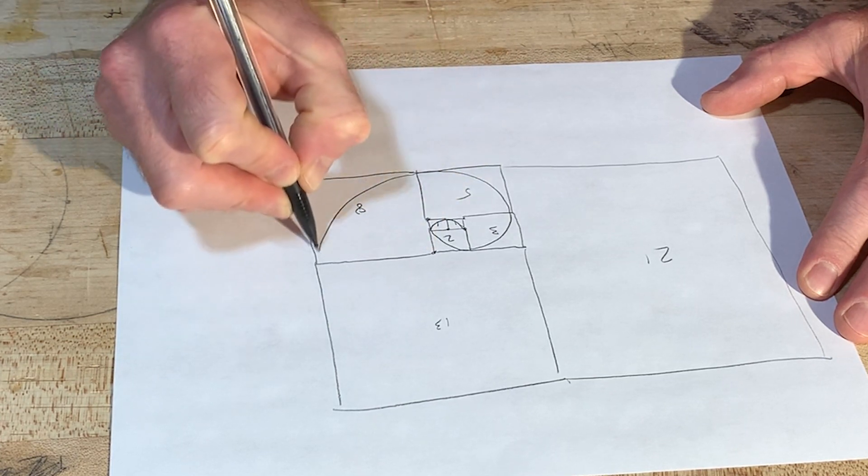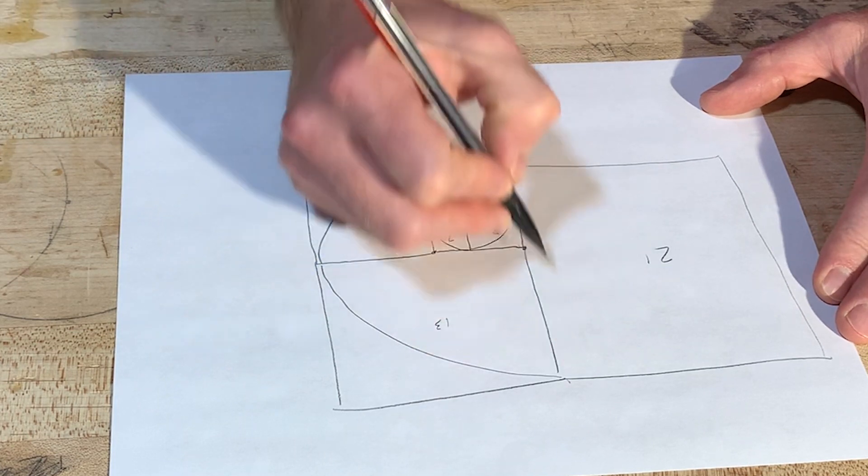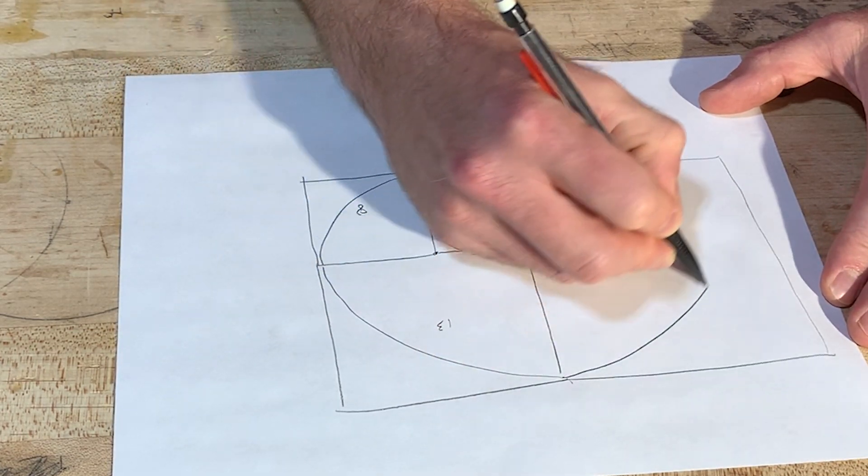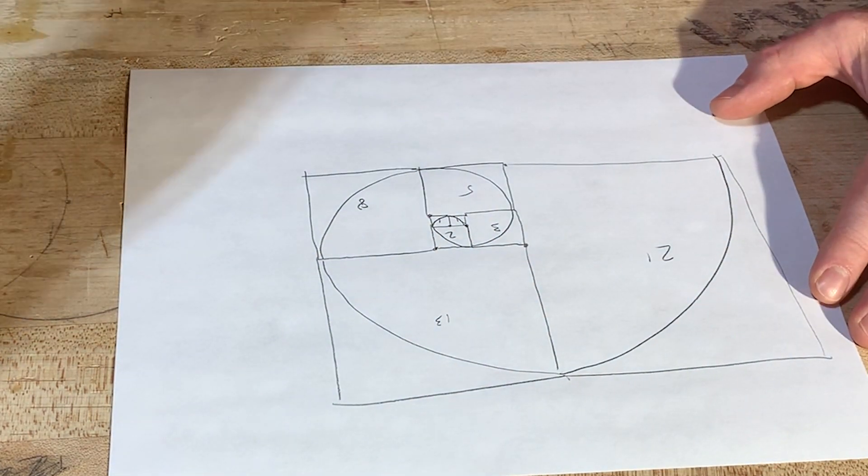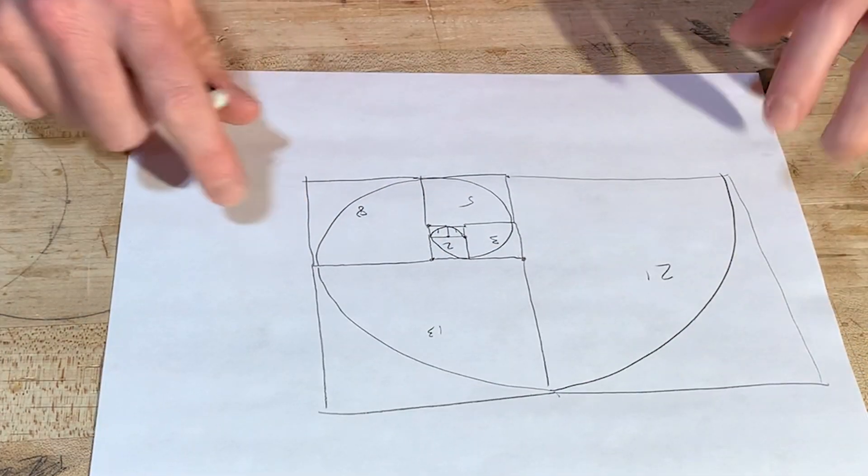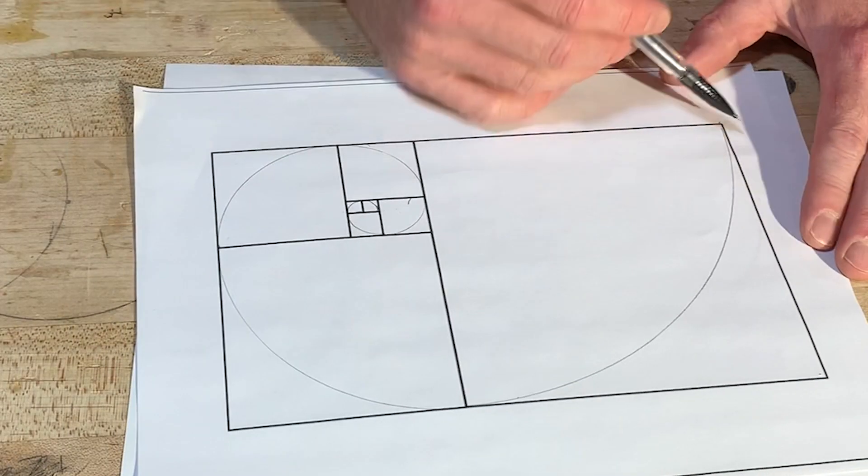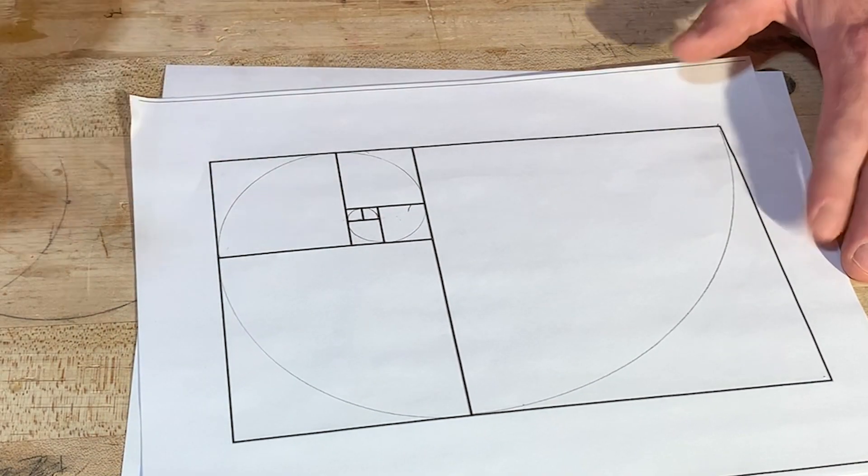Set your compass point there and swung an arc here. Set it there and swing an arc there. Set it here and swing an arc there, right? So that gives us our golden spiral. Right. And that's all cool. I like this. It's really interesting and it's really like pleasing when you actually do it. It's really cool.